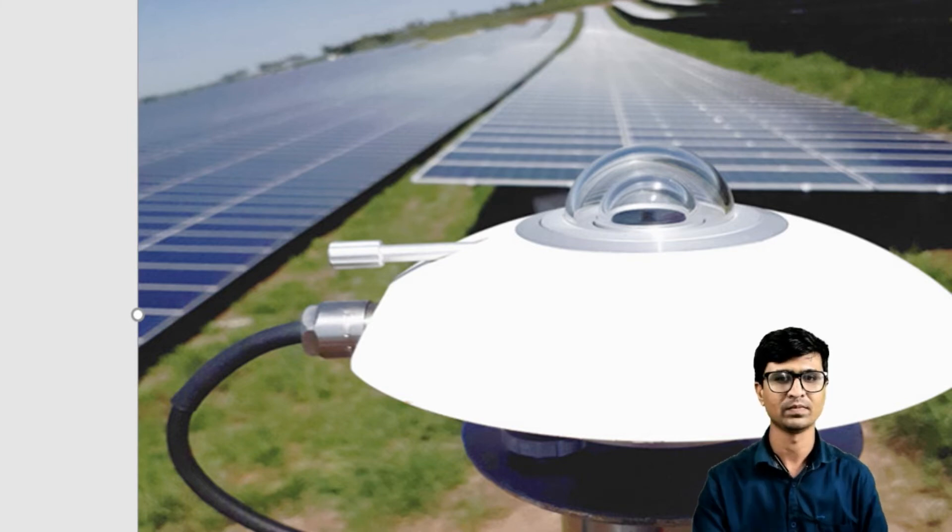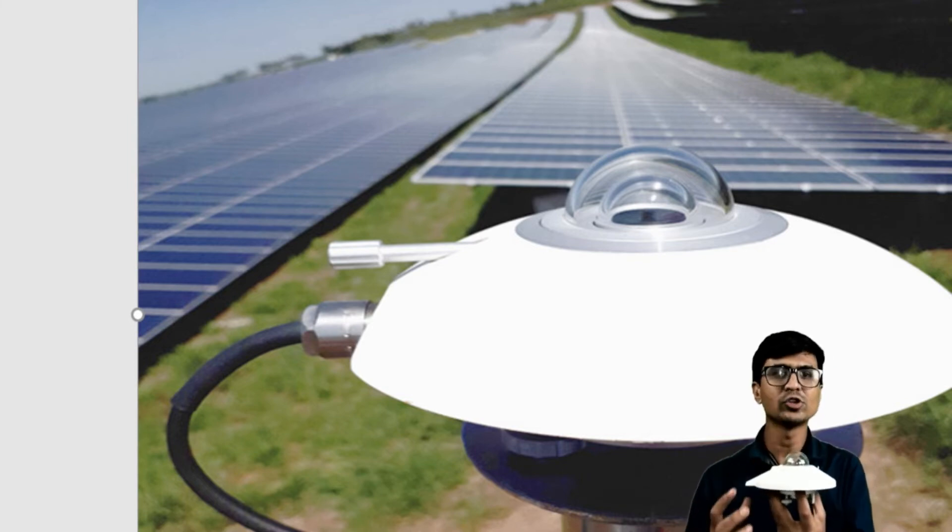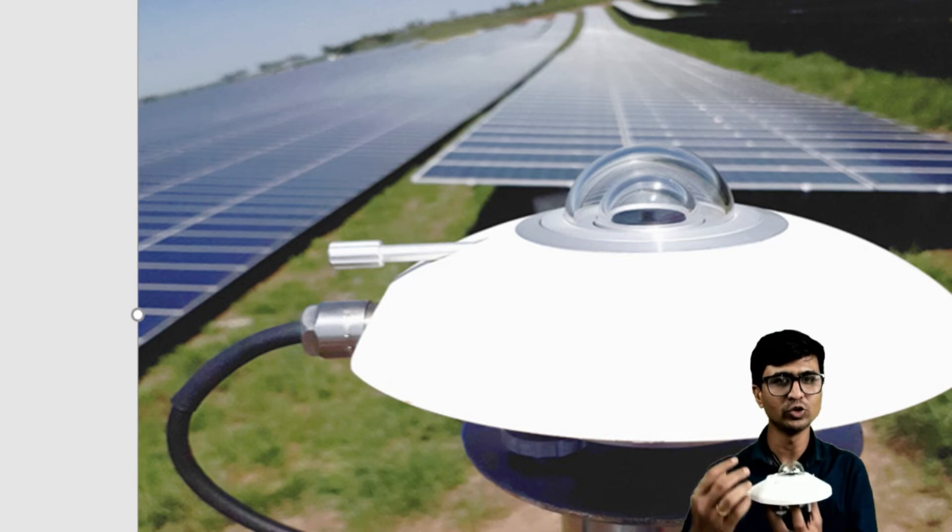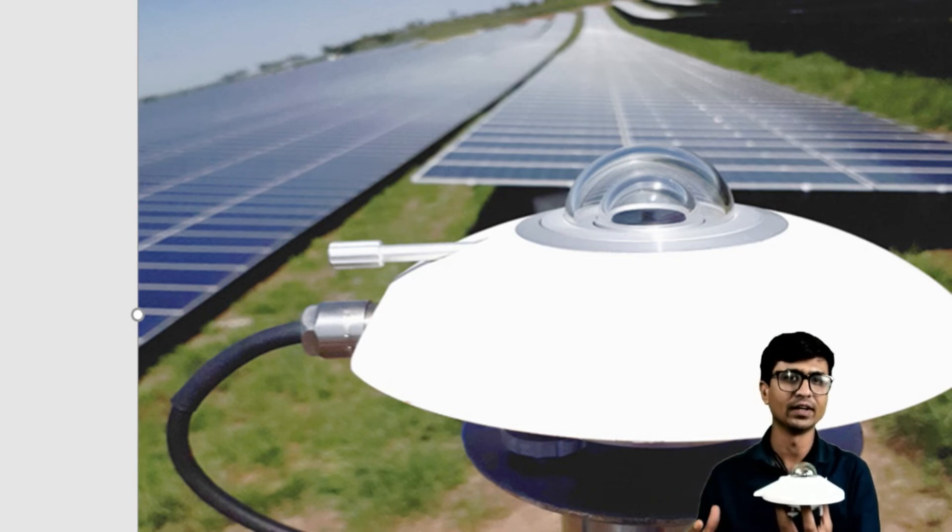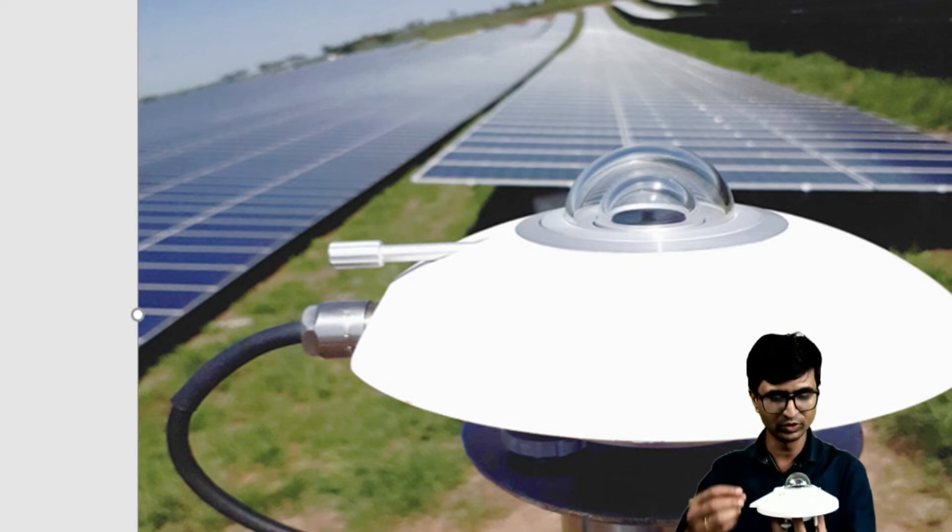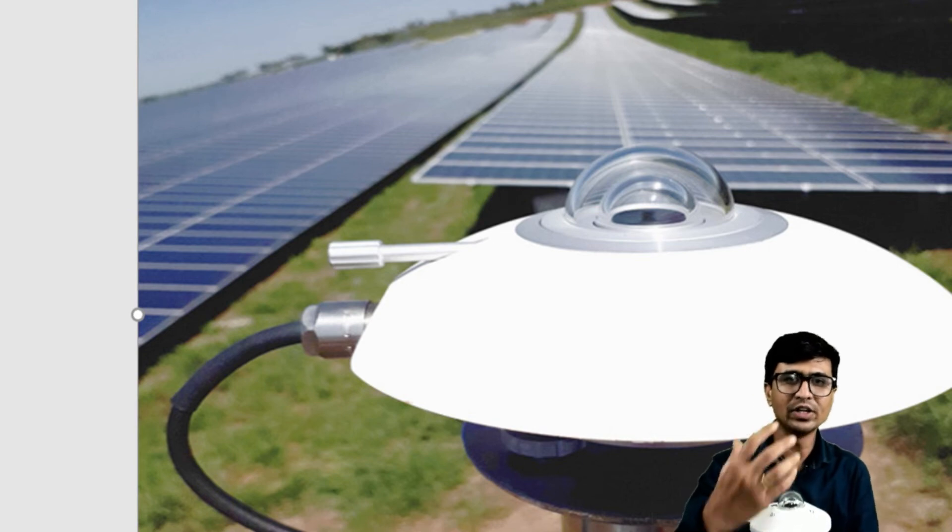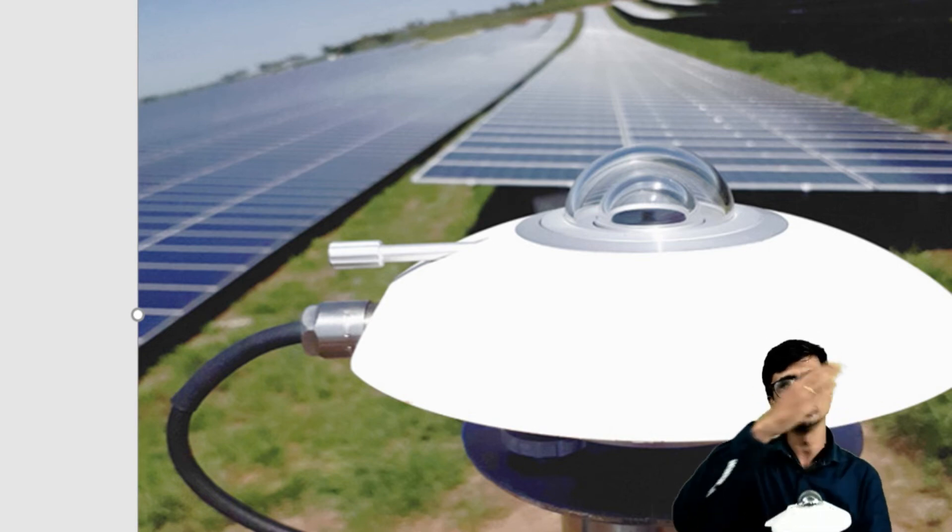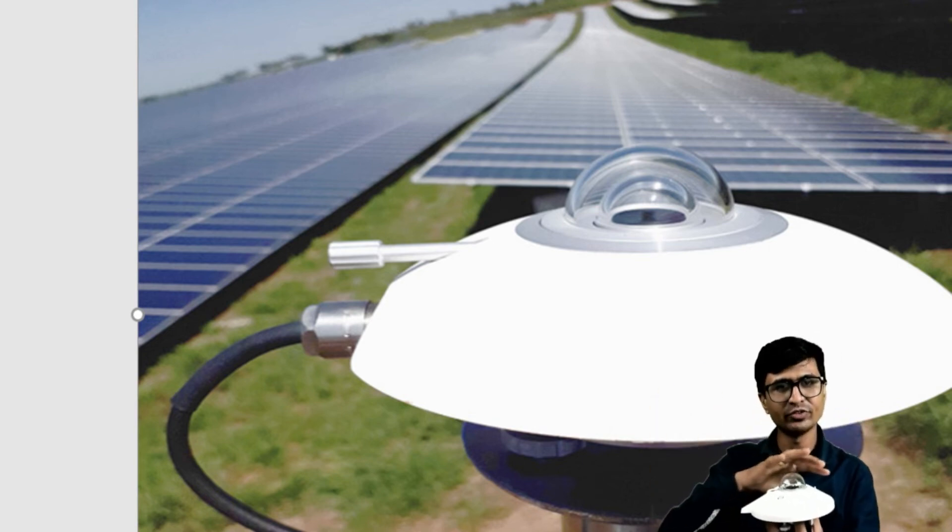This is the actual pyranometer we have. I'll show you how to install it and where to install it. Generally, the pyranometer is installed under the same tilt angle as the solar power plant, so it will measure the actual irradiance from morning to evening.